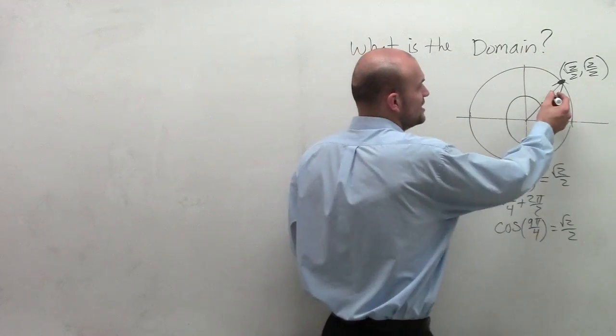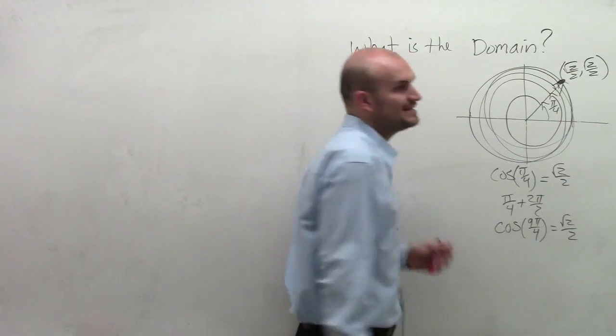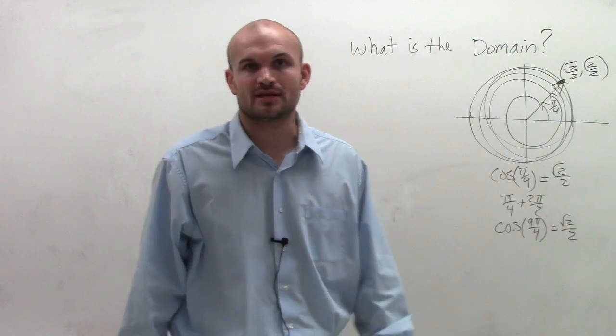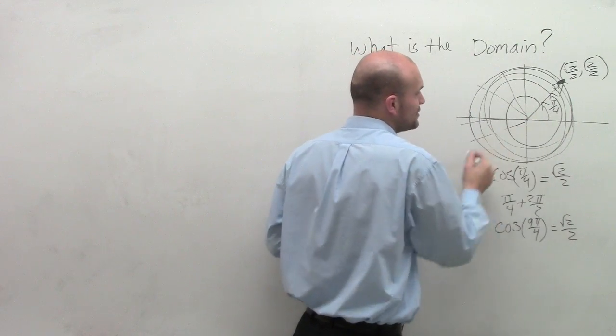And what you notice is you can keep on adding 2 pi. We can do this infinitely many times, and we're always going to produce a solution. And guess what? This works for any point that we pick on the unit circle.